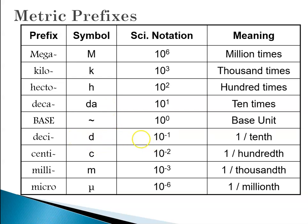And then we get two prefixes for less than the base unit. Deci is a tenth of the base unit. Centi is a hundredth, milli is a thousandth, and micro is a millionth. And notice there's a jump of a thousand between micro and milli and a jump of a thousand between kilo and mega.